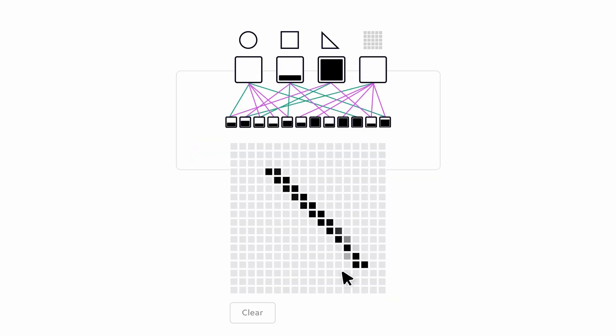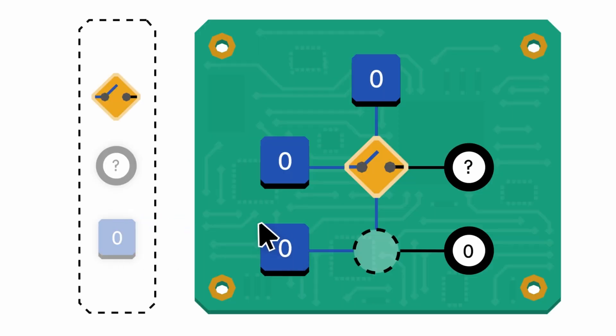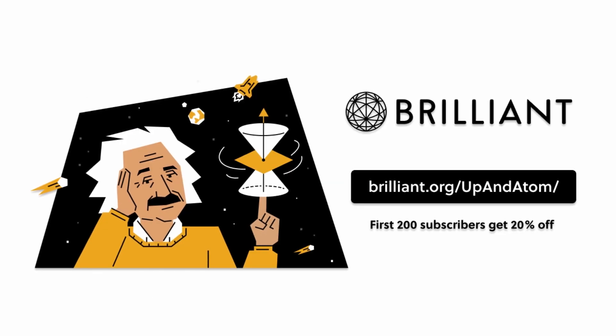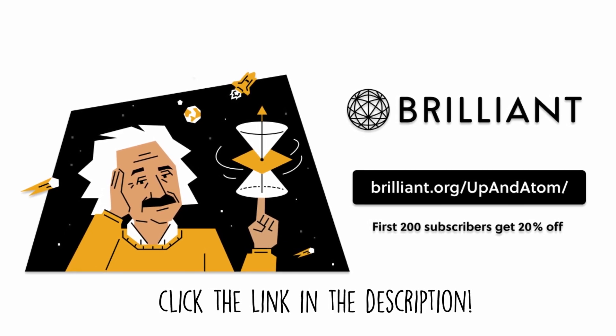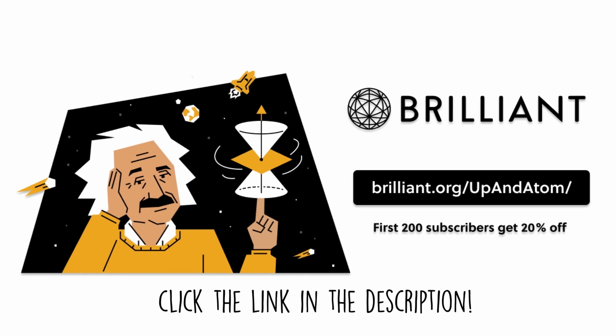To try everything Brilliant has to offer, free, for a full 30 days, visit brilliant.org slash upandadam or click on the link in the description. The first 200 of you will get 20% off Brilliant's annual premium subscription.